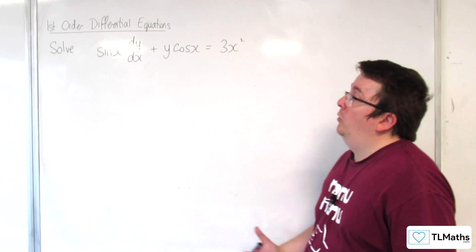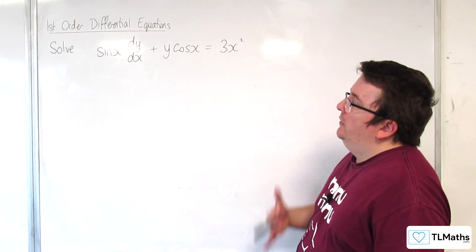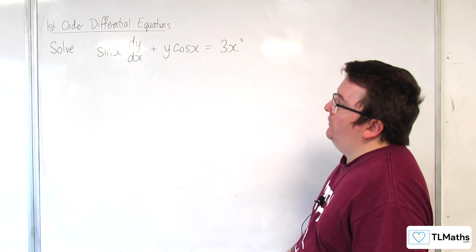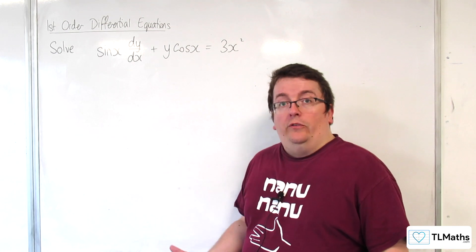So here is another example of a linear first order differential equation. Sine x dy by dx plus y cosine x is equal to 3x squared. How can we solve this?